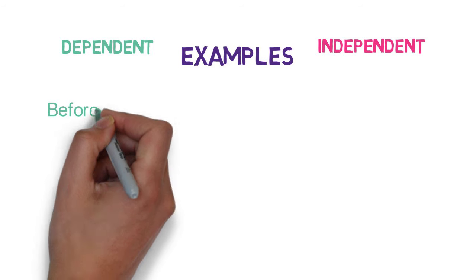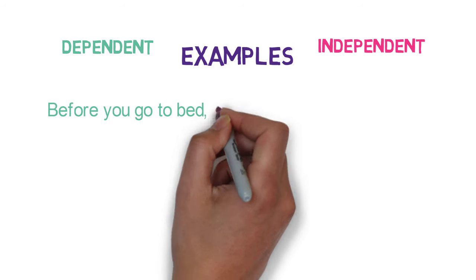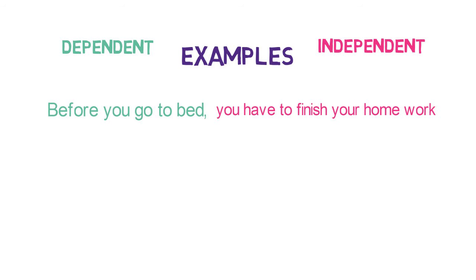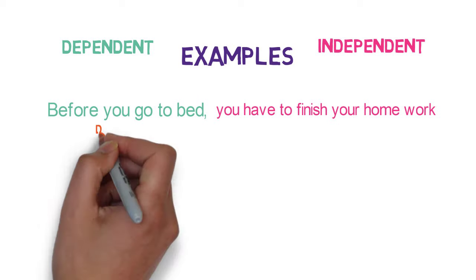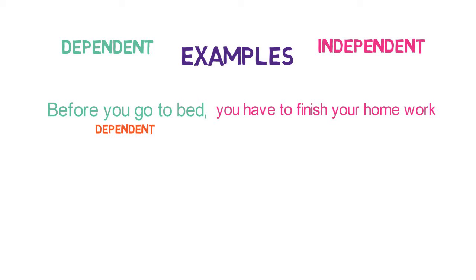Let's look at some more examples of dependent and independent clauses. First: 'Before you go to bed, you have to finish your homework.' Here, 'before you go to bed' cannot be used alone as it won't convey any meaning, so it's a dependent clause. Whereas 'you have to finish your homework' is an independent clause as it can be used alone. Combining them both gives a complete meaningful sentence.